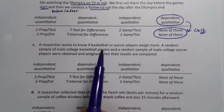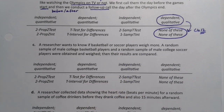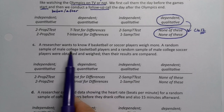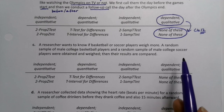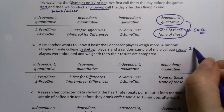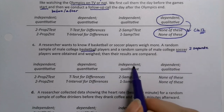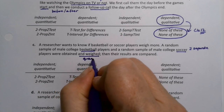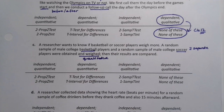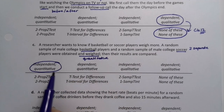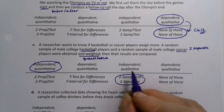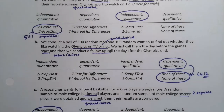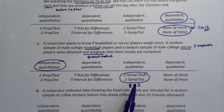Example 3: A researcher wants to know if basketball or soccer players weigh more. A random sample of male college basketball players and a random sample of male college soccer players were obtained and weighed. These are two separate groups — they don't even have to be at the same school — so it's independent. We're weighing them on a scale, which gives a number, so that's quantitative. It's independent and quantitative, which is section 11.3.